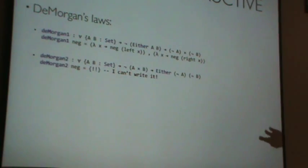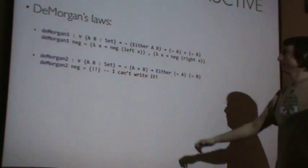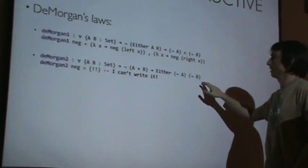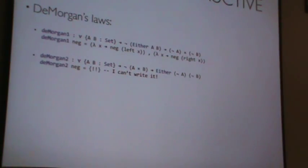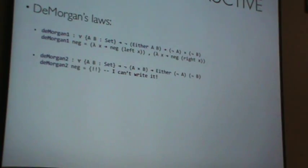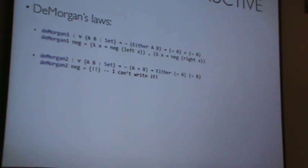However, we have the other De Morgan's Law — the other direction of the implication — and that has the same problem. We have 'not (A and B)' implies 'not A or not B'. Unfortunately, we can't actually write that in Agda, Haskell, or any of these similar logics directly, because it's not a constructive kind of proof. In classical logic, you can often make a proof by saying: I'm going to make a convincing argument that this object exists without actually providing it — like saying 'there exists a number whose square is 16' without giving you that number.